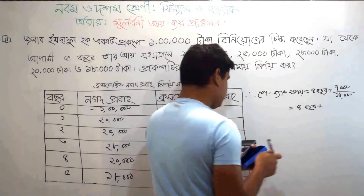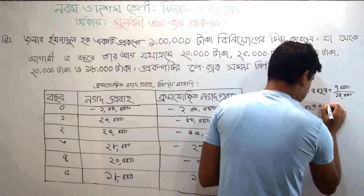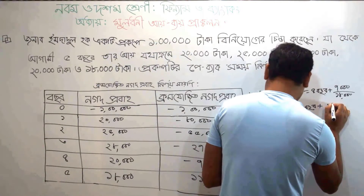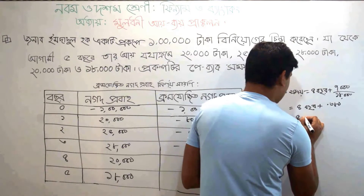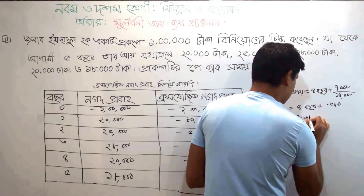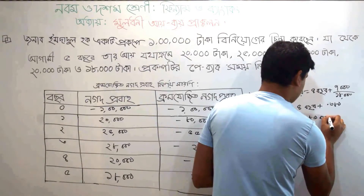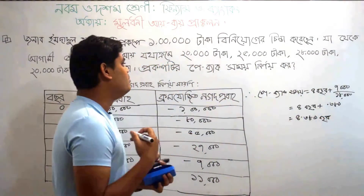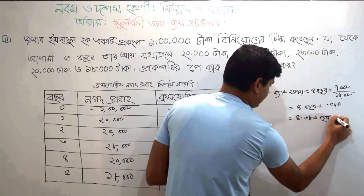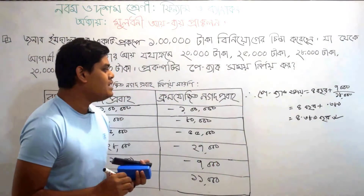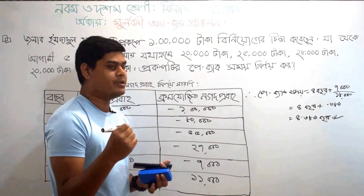That means 0.389. That means 0.389. That means 0.399. This is the way to show 2.